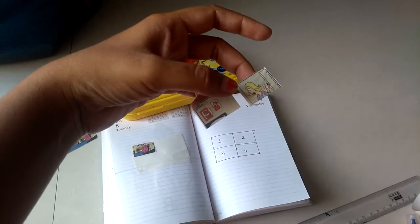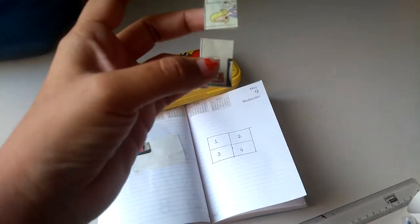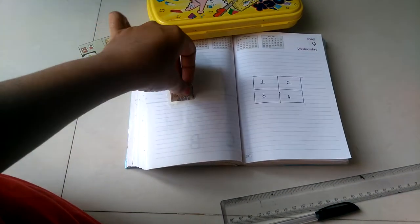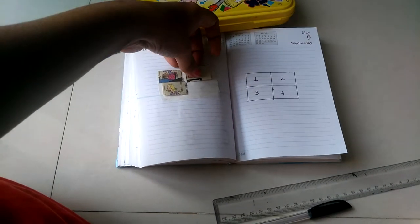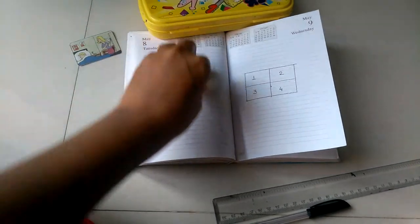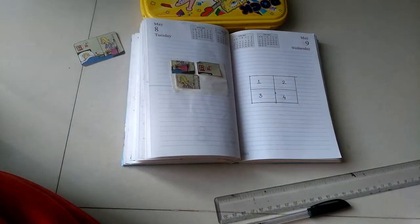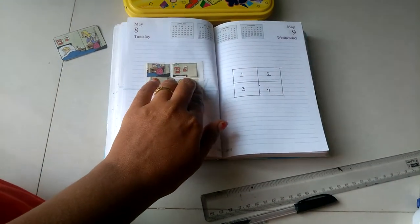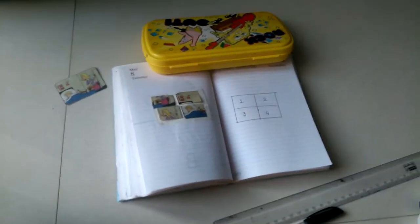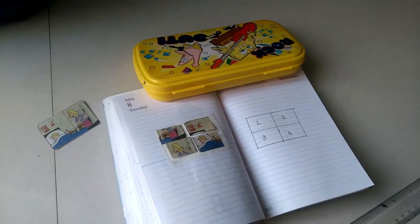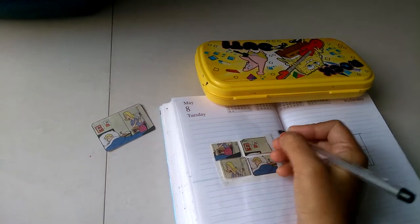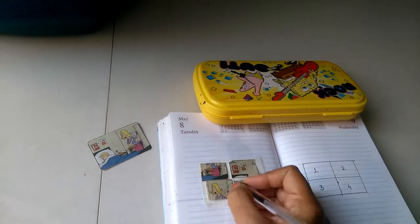And also there is one tip for you: before cutting, remove the back sheet of the sticker. Now paste it on this paper. Here is one tip for you, now you need to give numbers to these stickers.